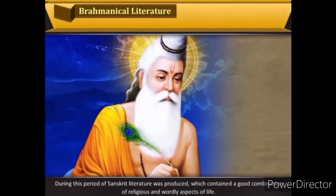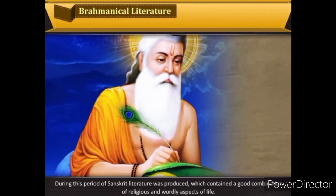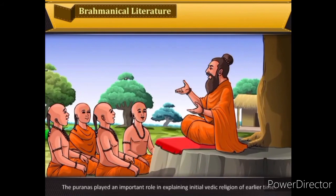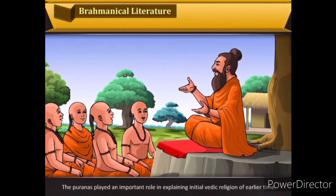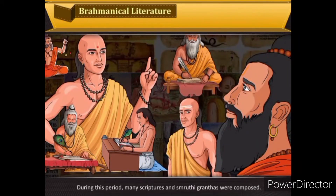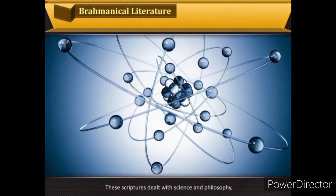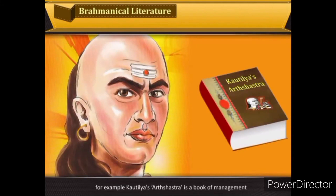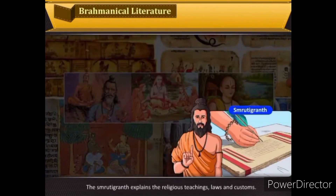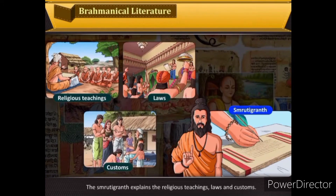During this period, Sanskrit literature was produced which contained a good combination of religious and worldly aspects of life. The Puranas played an important role in explaining the initial Vedic religion. Many scriptures and smriti granthas were composed dealing with science and philosophy — for example, Kautilya's Arthashastra, as well as books on arts, mathematics and other sciences. The smriti granth explains religious teachings, laws and customs.